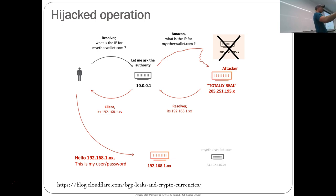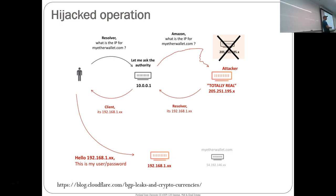In North Korea this kind of attack is seen as very beneficial because they have no way to get money otherwise — this is how they circumvent sanctions by going after cryptocurrency wallets and monetizing that. So it's surprising this attack came out of Russia and not North Korea. While the hijacking was happening, clients had no way to actually reach the real site, and DNS entries are cached, so you had this bogus entry in the DNS hierarchy for a while.